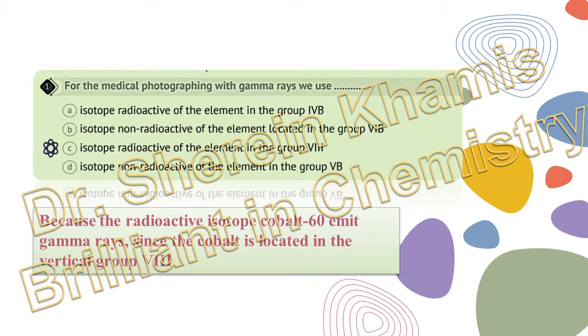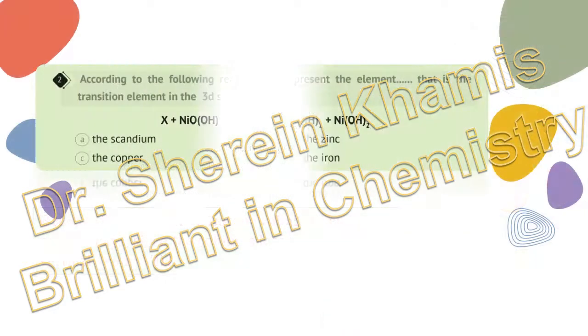Since cobalt is located in the vertical group VIB, the radioactive isotope cobalt-60 emits gamma rays, so the right answer here will be letter C.